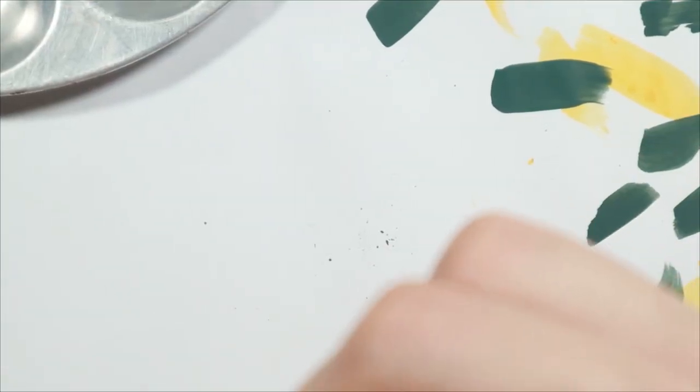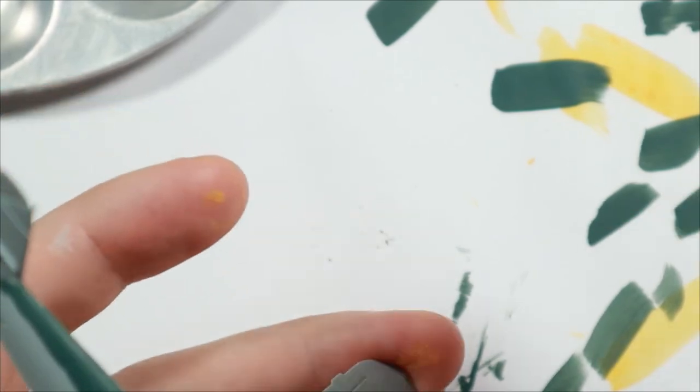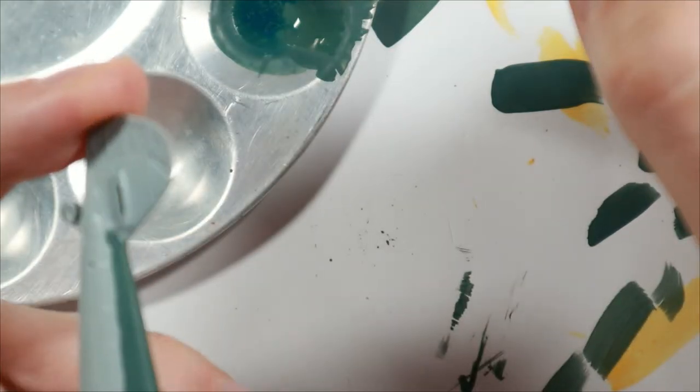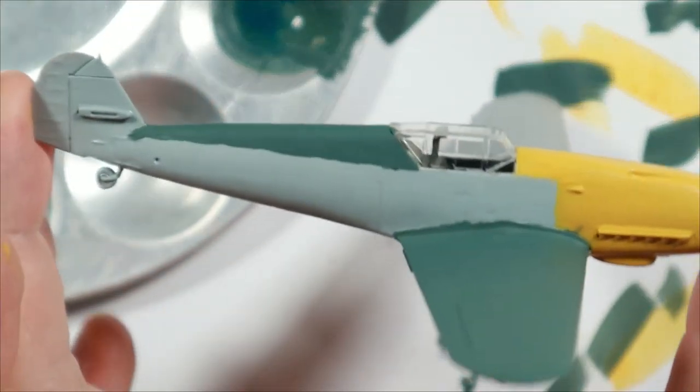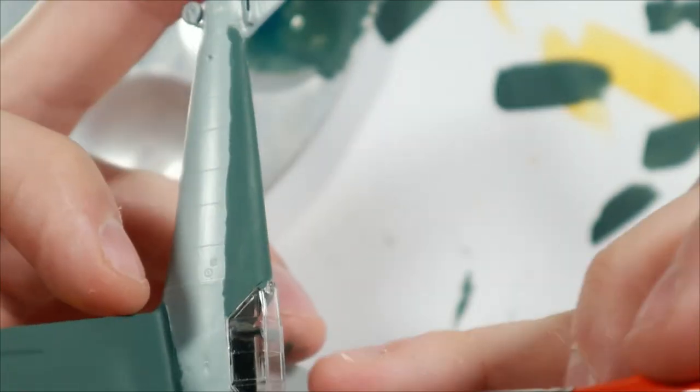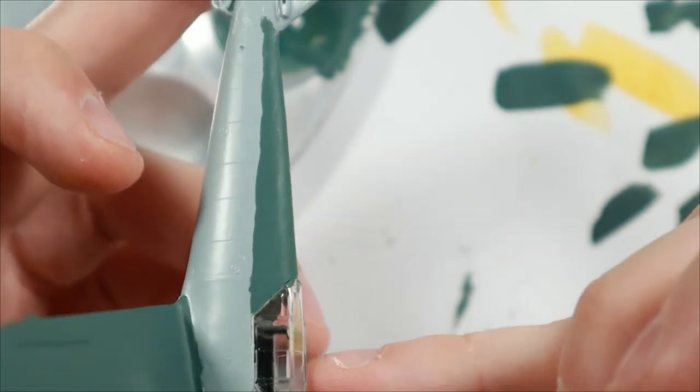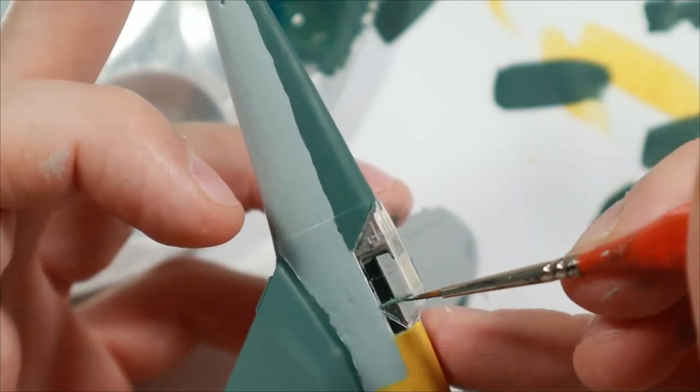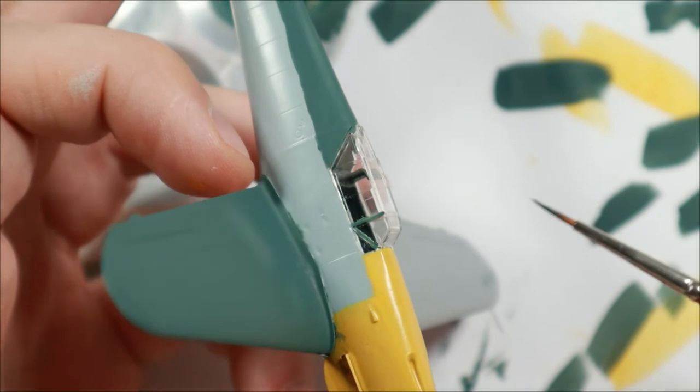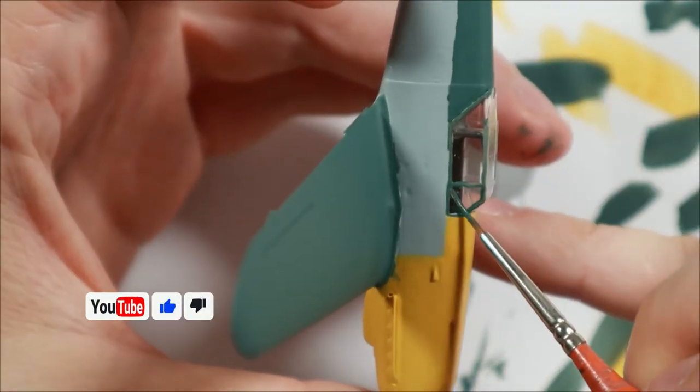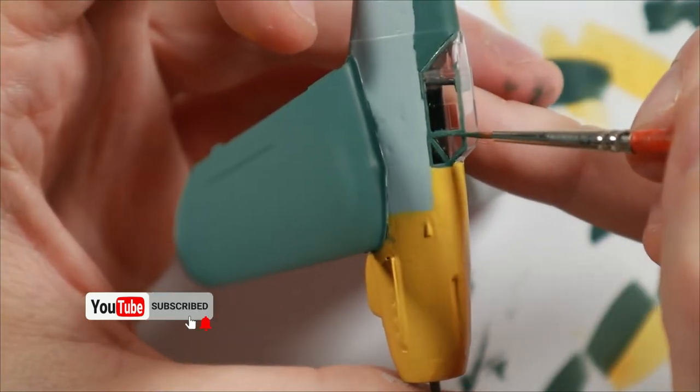Alright, so now we have to paint the canopy. This is one of the trickiest parts where you really need a steady hand. You have to hold it in a certain direction. I'm holding it with my two fingers—thumb and middle finger. Now basically what you want to do is outline the green. Don't worry if you make a mess, because you can tidy it up with a toothpick.